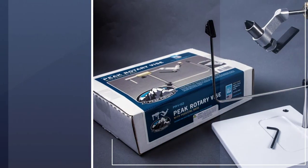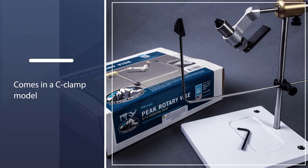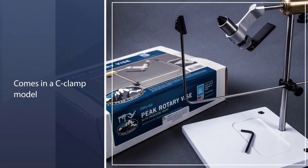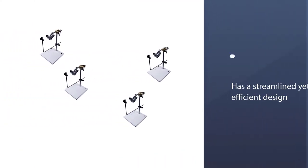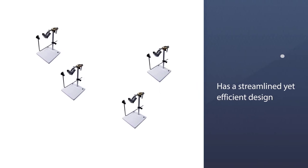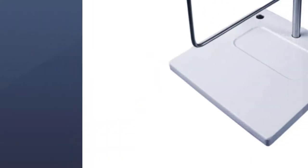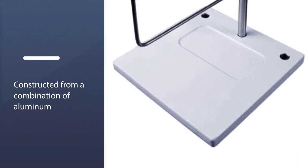The Peak Vise has a streamlined yet efficient design, specifically for fly tying. It's constructed from a combination of aluminum, stainless steel, tool steel, and brass. This vise can withstand frequent use with no signs of wearing out.